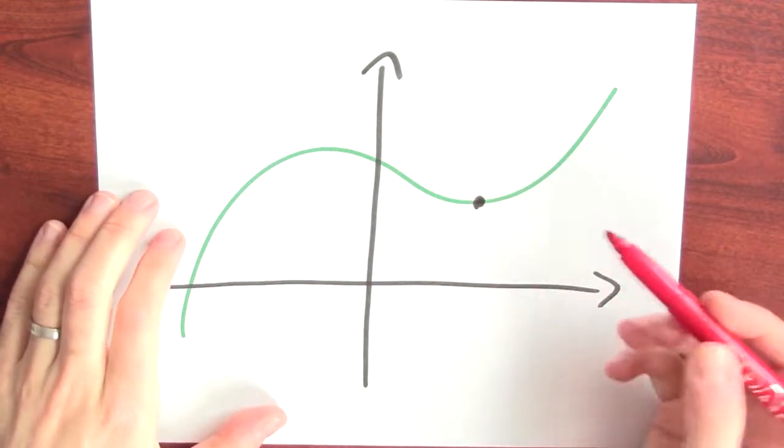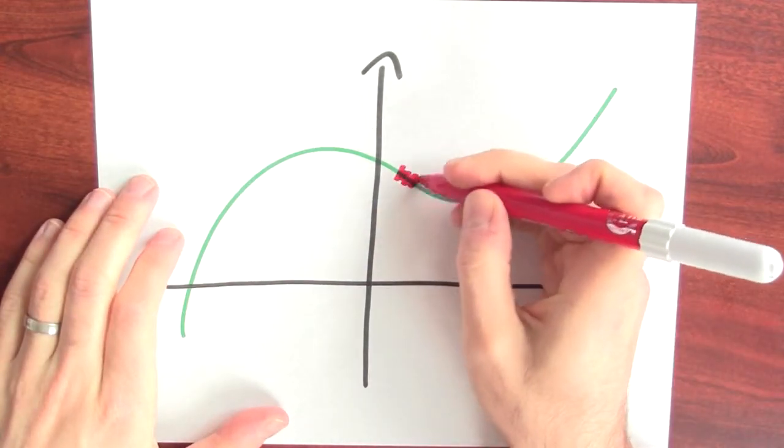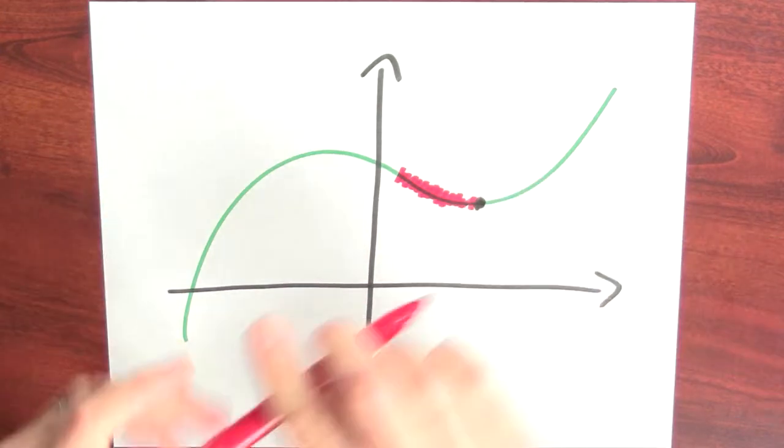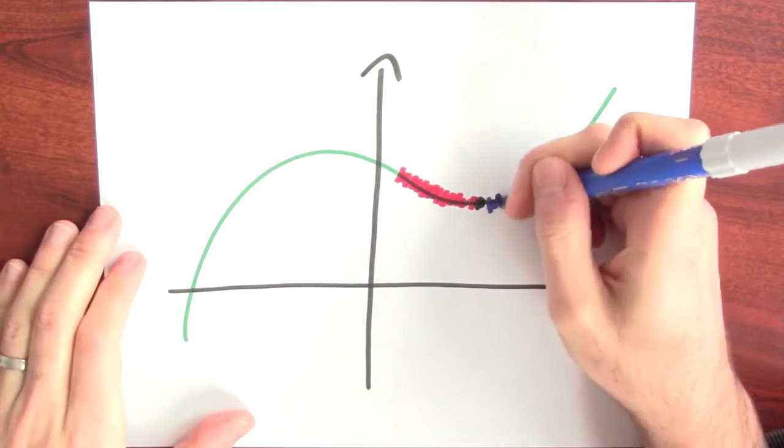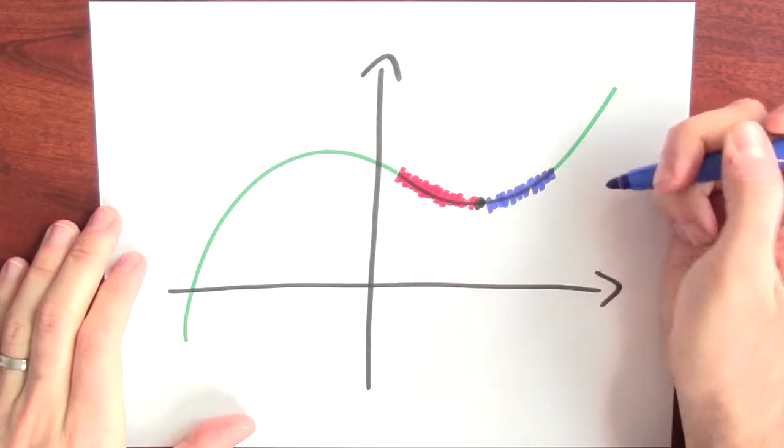That every time you've got a local minimum, on one side the function's decreasing, and on the other side the function's increasing. Plenty of local minima do look exactly like that, but there's also plenty of pathological examples.